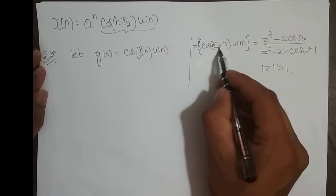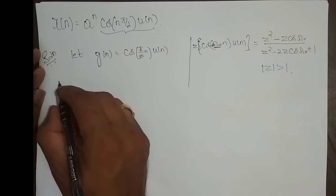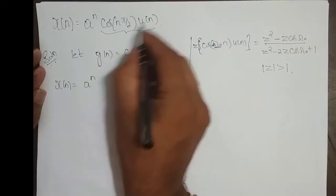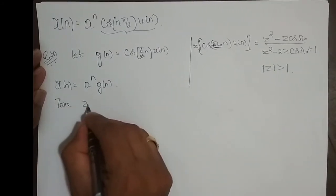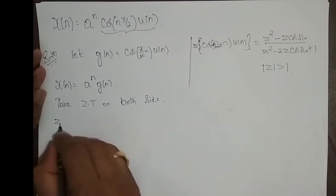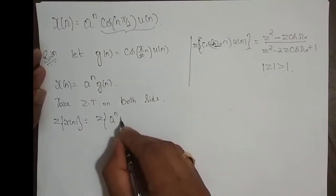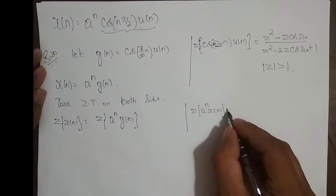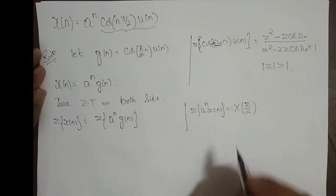Now here in this case, what is the value of ω₀? ω₀ is π/2. Now what happens to x(n)? x(n) becomes aⁿ times g(n), since g(n) is that cosine part. So x(n) = aⁿ · g(n). Taking the Z-transform on both sides, Z{x(n)} = Z{aⁿ g(n)}. So which property do I need to use? The Z-transform of aⁿ x(n) is X(z/a).